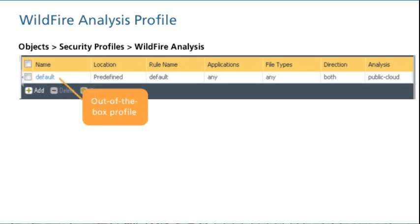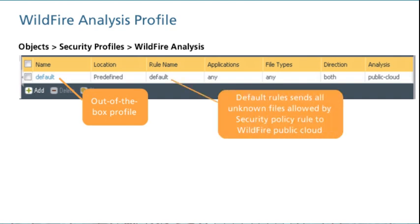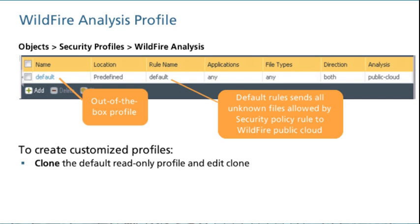A Palo Alto Networks firewall includes a predefined, read-only, default Wildfire analysis profile. If the default profile is assigned to a security policy rule, then the profile sends all unknown files from any applications allowed by the rule to the Wildfire public cloud for analysis. Beginning with PanOS 8.0, blocked files are also submitted to Wildfire. To create a customized Wildfire analysis profile, clone the default profile and edit the clone, or you can create a new Wildfire analysis profile. Use customized Wildfire analysis profiles to minimize the number of files analyzed by Wildfire between more trusted zones or maximize the number of files analyzed between less trusted zones. In a zero-trust configuration, no zone is completely trusted.